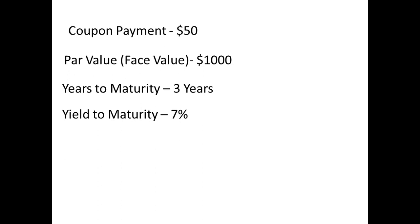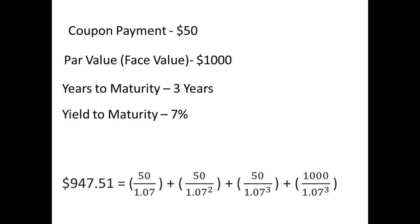The present value of the bond would be calculated as 50 divided by 1.07 plus 50 divided by 1.07 to the 2nd power, plus 50 divided by 1.07 to the 3rd power, plus 1,000 divided by 1.07 to the 3rd power, giving us a value of $947.51.